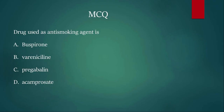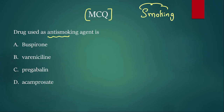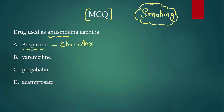Coming to the third MCQ: drug used as an anti-smoking agent — what drug is used for smoking cessation? Buspirone — remember, the snake makes a 'bus' sound and there is anxiety — buspirone is used for chronic anxiety, so that is not the answer here.